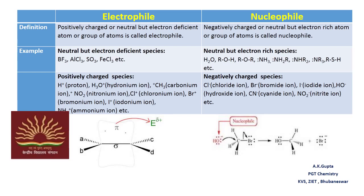Similarly, one group of nucleophiles will be neutral but electron rich species like H2O, alcohol, ether, ammonia, primary amine, secondary amine, tertiary amine, thioalcohol, etc.